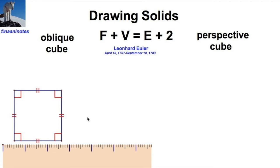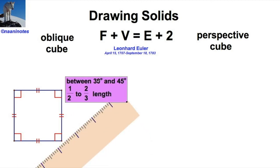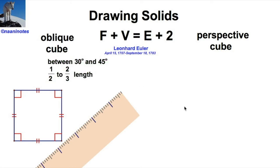The only thing that makes it oblique is we're going to take our straightedge and give it an angle - somewhere between 30 and 45 degrees. I want the distance that we draw to give the depth to be one-half or two-thirds of the length.